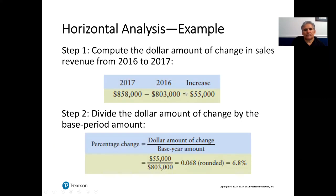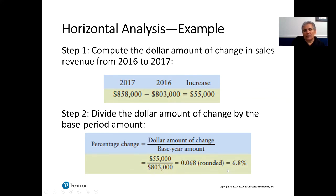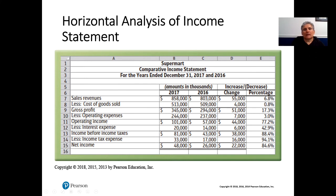Let's go ahead and look at the computation: $858,000 minus $803,000 is $55,000. Because 2017 is larger than 2016, you had an increase. Step two is to divide the dollar amount of change — $55,000 — by the base period amount. The base period is always where you started; we went from 2016 to 2017, so 2016 is always the base year. So $55,000 divided by $803,000 is 0.068, rounded, or 6.8%. We can say that sales are up by 6.8%.